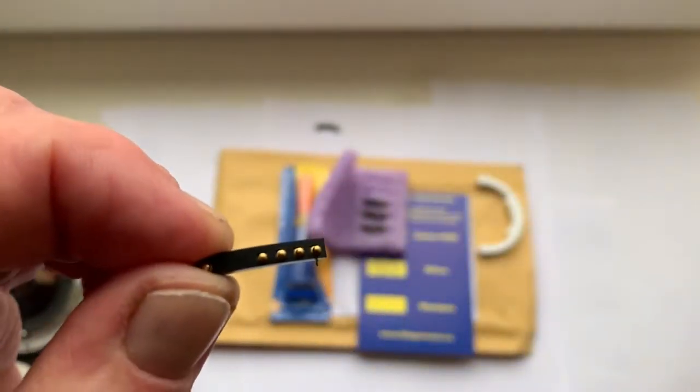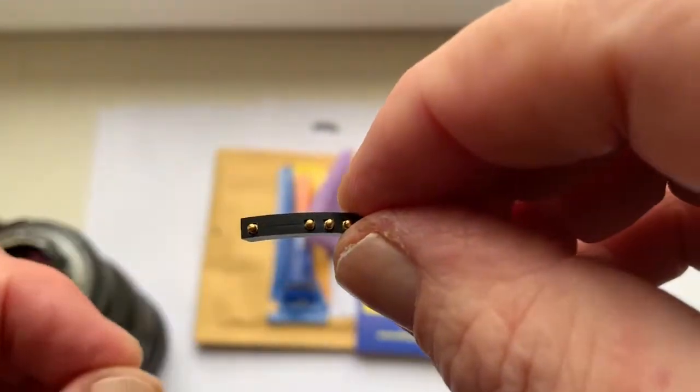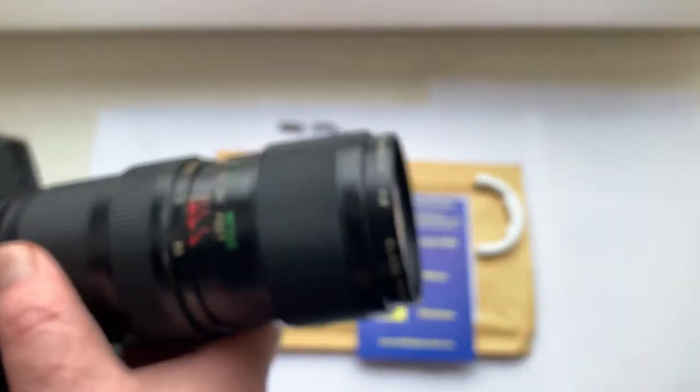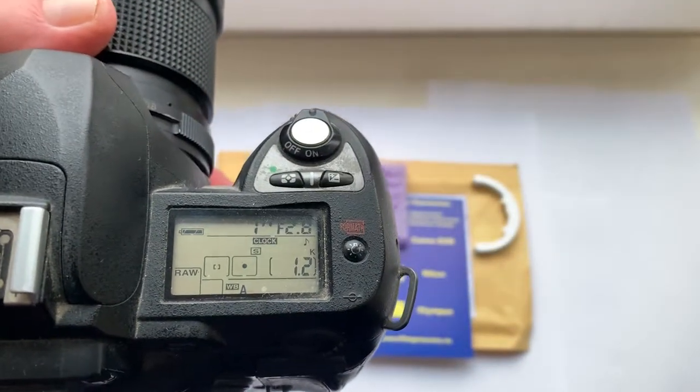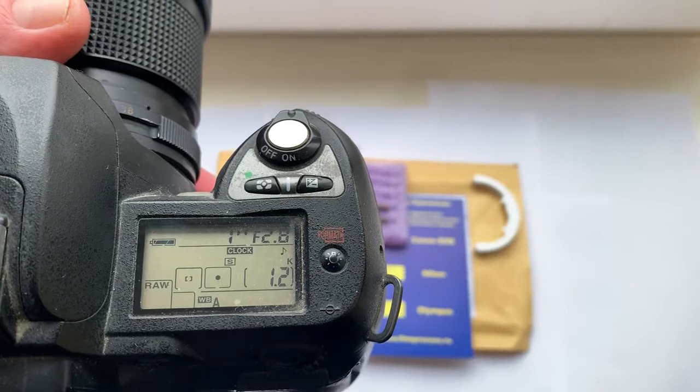The chip number two: full rocket, full pre-programmed, not damaged. The chip number three: 45 millimeter focal length, aperture 2.8.